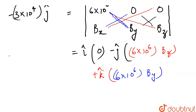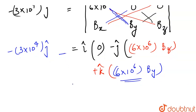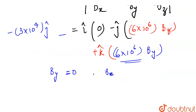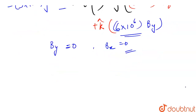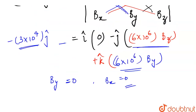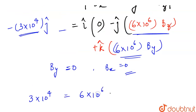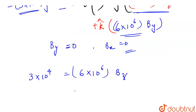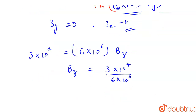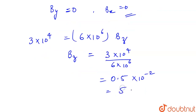On the left hand side we have minus 3 into 10 to the power 4 j cap. Comparing coefficients: the coefficient of k cap on the right is 6 into 10 to the power 6 times BY, which equals zero, so BY = 0. The coefficient of j cap gives: 3 into 10 to the power 4 = 6 into 10 to the power 6 times BZ. Therefore BZ = 3 into 10 to the power 4 divided by 6 into 10 to the power 6, which equals 0.5 into 10 to the power minus 2, or 5 into 10 to the power minus 3.